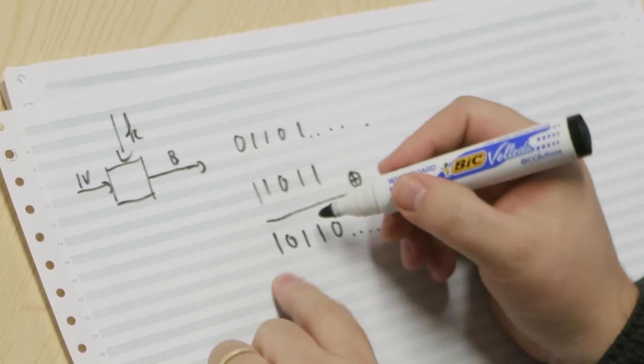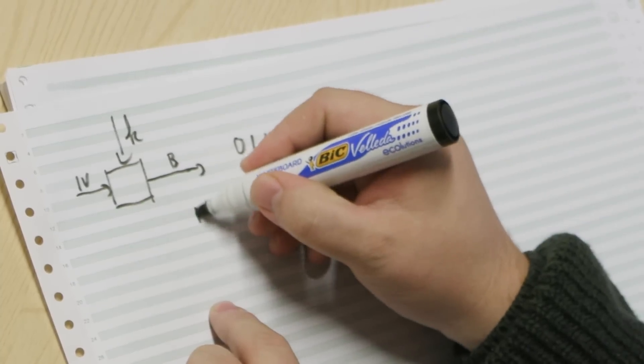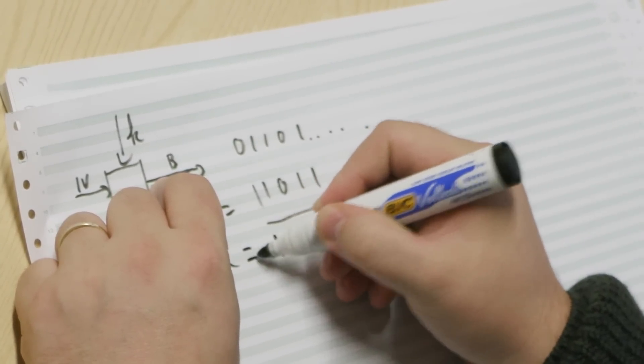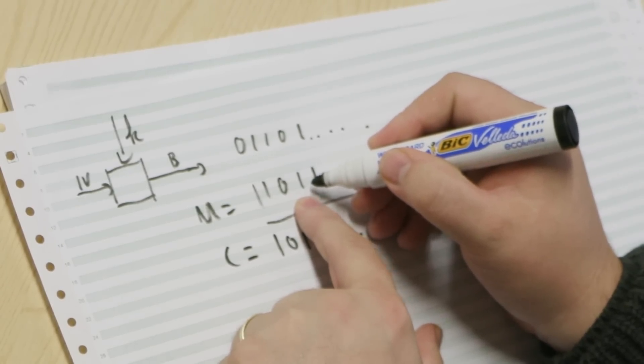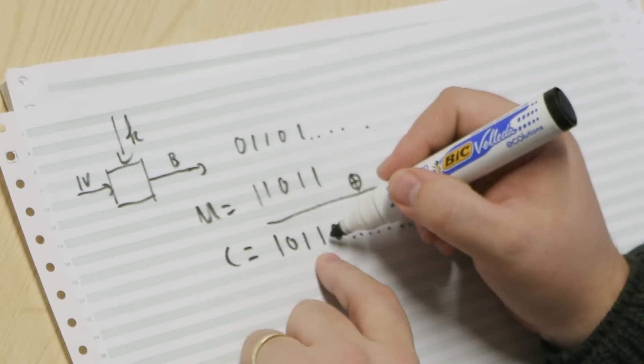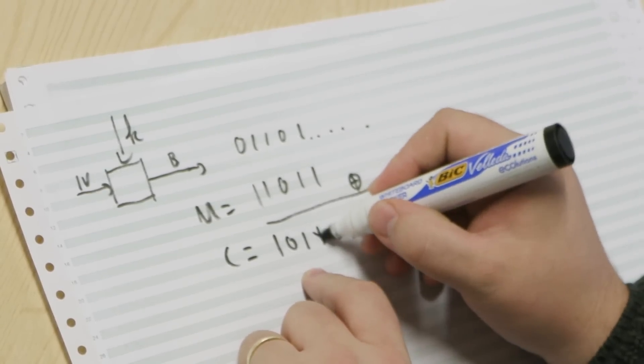If I can intercept the ciphertext, so this is the plaintext m, this is the bit string that we use to encrypt, and this is the resulting ciphertext. Now let's say that it is this bit that I want to alter in the message, and I want to change it from a 1 to a 0, right? If I flip this bit to a 0 and I send it to you...